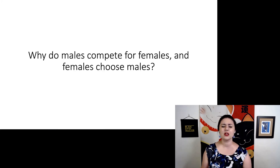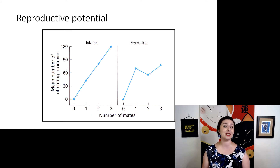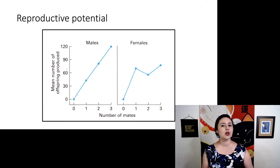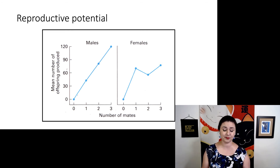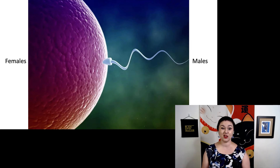Males in general are competing for females, and females are usually choosing males. What this boils down to is reproductive potential. Males are limited mainly by the number of mates they can access — they can just have a lot of offspring. Think Genghis Khan. Females, however, especially when talking about mammals, are not able to have nearly as many children. If you increase the number of mates a female has access to, she's probably not going to have that many more children.